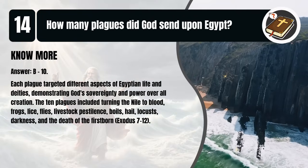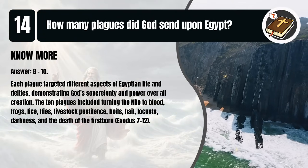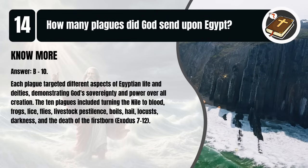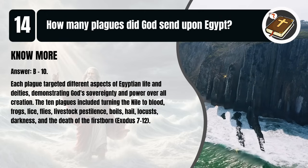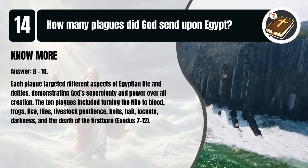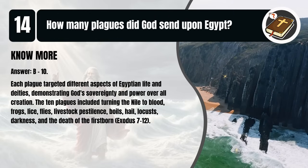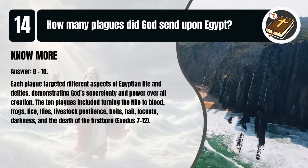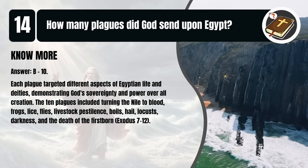That's B. Ten. Each plague targeted different aspects of Egyptian life and deities, demonstrating God's sovereignty and power over all creation. The ten plagues included turning the Nile to blood, frogs, lice, flies, livestock pestilence, boils, hail, locusts, darkness, and the death of the firstborn. Exodus chapters 7-12.